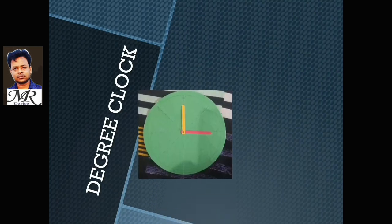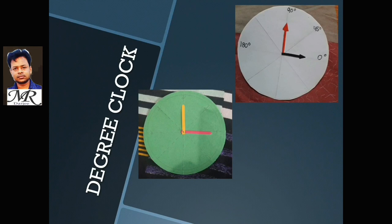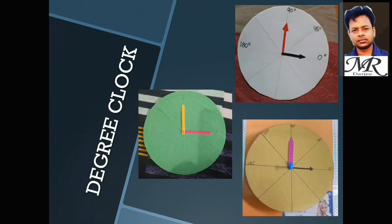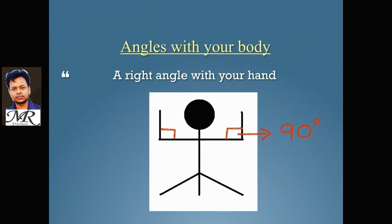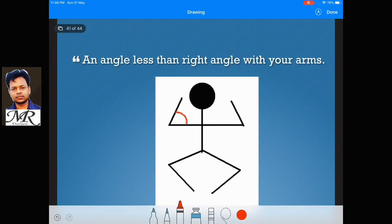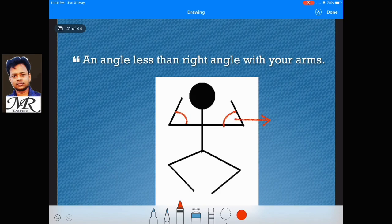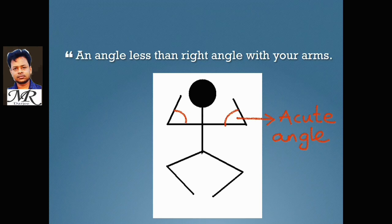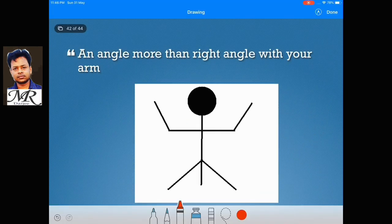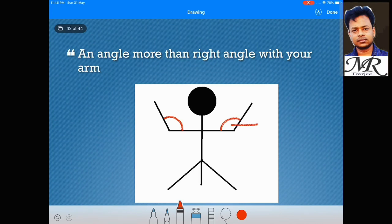Now see a degree clock — you can make 0 degrees, 45 degrees, 90 degrees. Angles with your body: a right angle with your hand — this is 90 degrees. An angle less than a right angle with your arms — this is an acute angle. An angle more than a right angle with your arm — this is an obtuse angle.